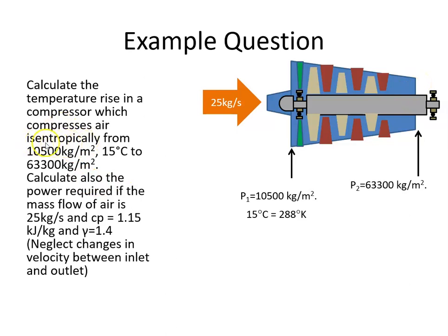Isentropic is a process where the entropy is constant, and for us that is when the system is adiabatic and reversible. So we have a formula for reversible adiabatic systems.